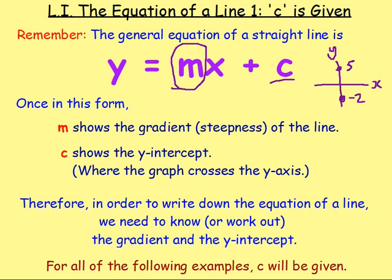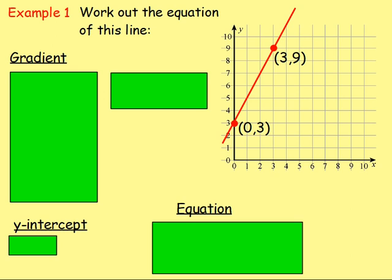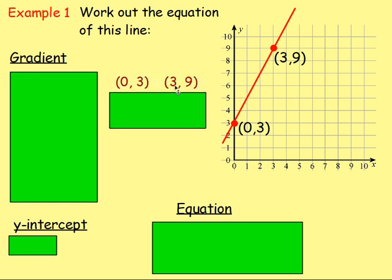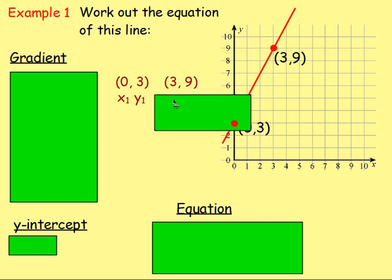Example one: work out the equation of this line. You've got the red line drawn in and we have two points on the line — this point at 0,3 and this point at 3,9. In order to write down the equation of a line, we need to first know the gradient. So write down the two points: 0,3 and 3,9. With 0,3, 0 is the x-coordinate and 3 is the y-coordinate. With 3,9, 3 is the x-coordinate and 9 is the y-coordinate.